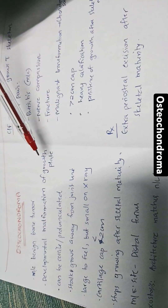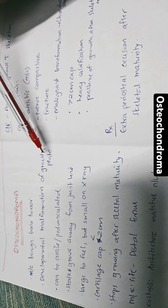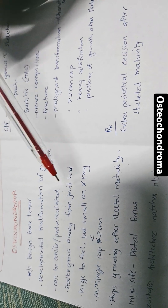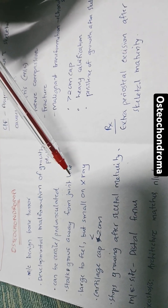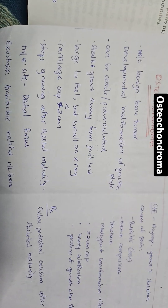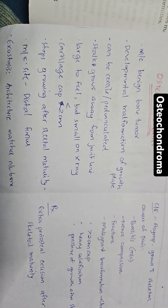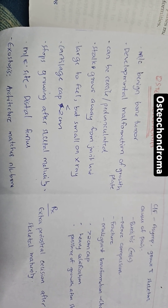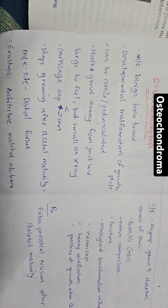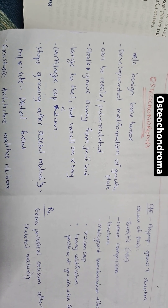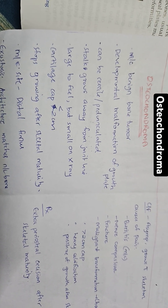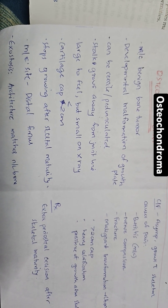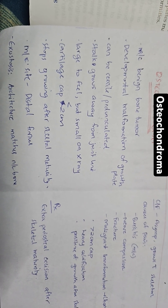It is a developmental malformation of the growth plate and the stalk can be pedunculated or sessile, and grows away from the joint line. If there is a stalk, the stalk and the head of the tumor are made up of mature bone, but the tip is made up of cartilage — hence it is called osteochondroma. It is also called exostosis, and its architecture matches normal bone.